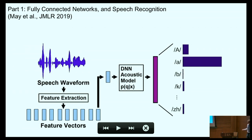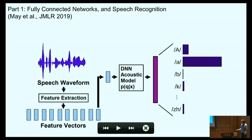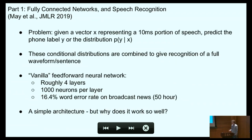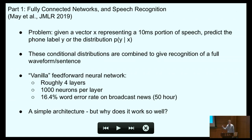You split the waveform into relatively short windows, say 10 milliseconds in length. For each 10-millisecond window, you extract a feature vector typically representing the energy at different frequencies within that frame. Then you try to make a prediction — which phoneme, or which sound in English, underlies that particular frame. The acoustic model takes a frame and outputs a posterior distribution, a probability distribution over the possible phoneme labels. In a nutshell, given a vector x representing a 10-millisecond portion of speech, predict the phoneme label y, or more generally a distribution p(y|x).